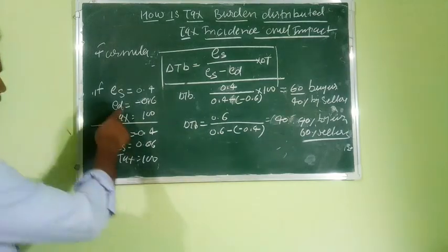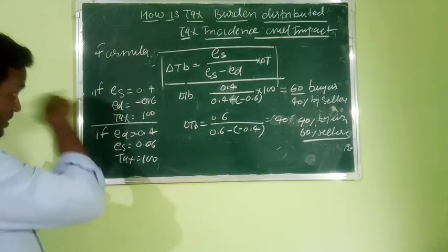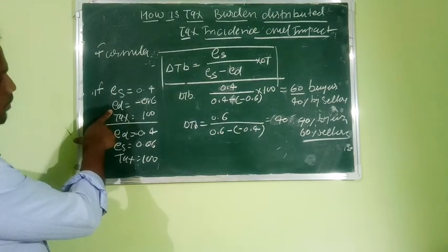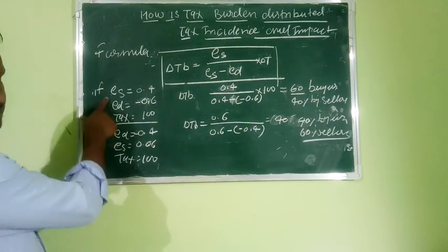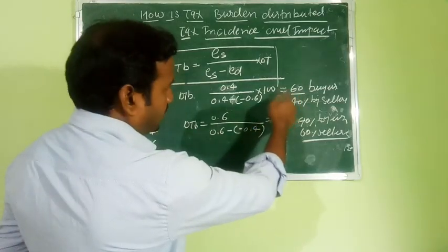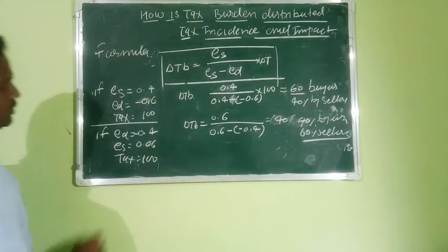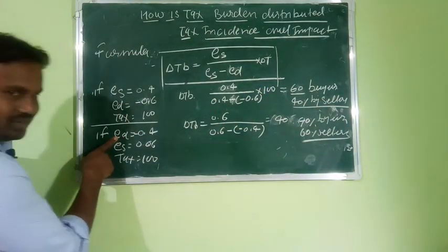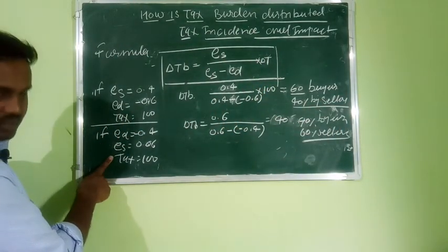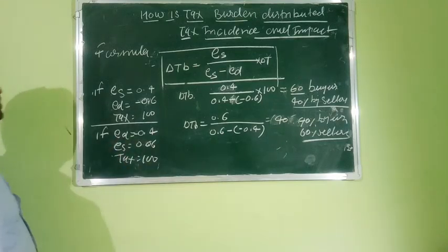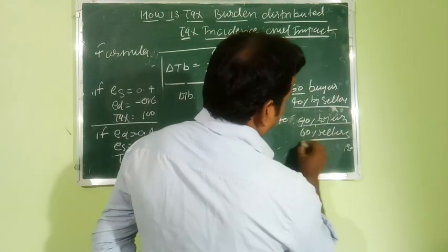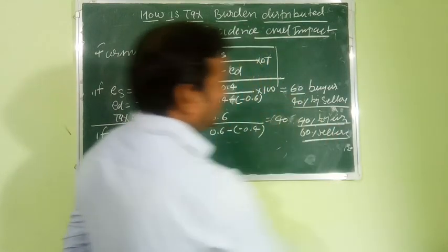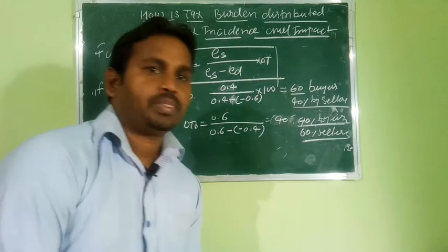If elasticity of supply is less than elasticity of demand, then the maximum tax is paid by the buyer, and the seller pays less. If elasticity of demand is less than elasticity of supply, then the maximum share is paid by the seller and low payment by the buyer. Please note this down.